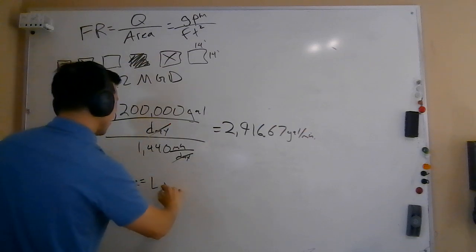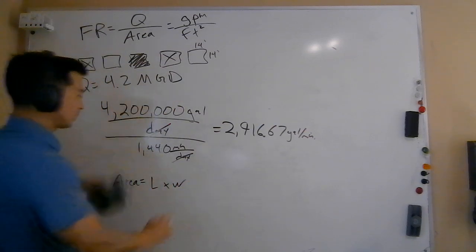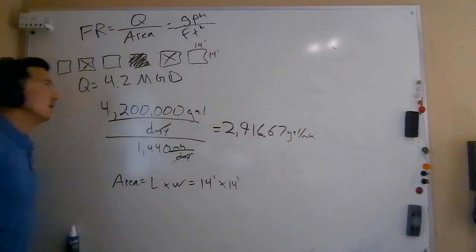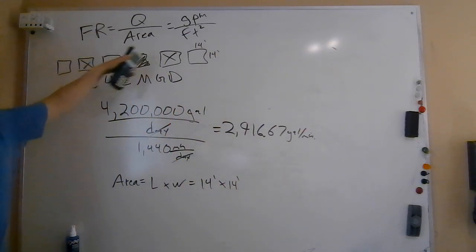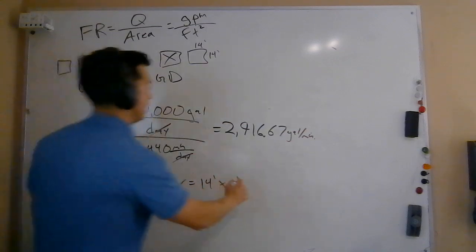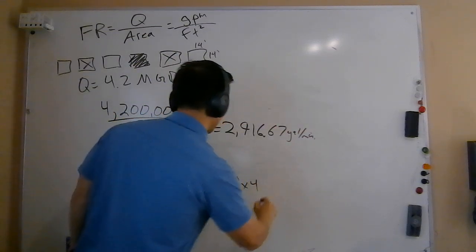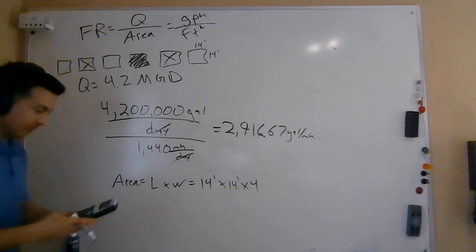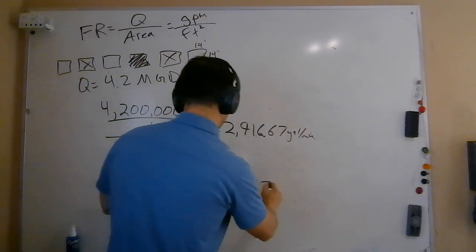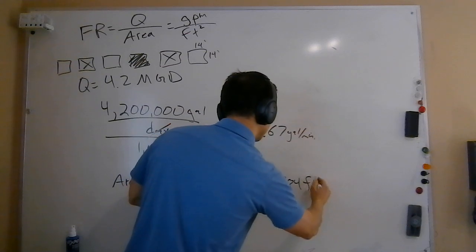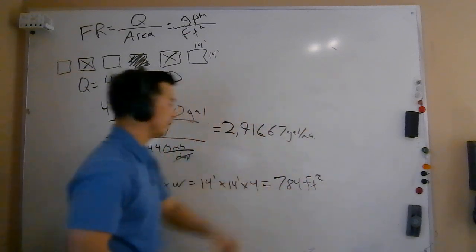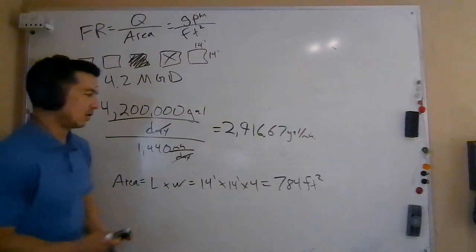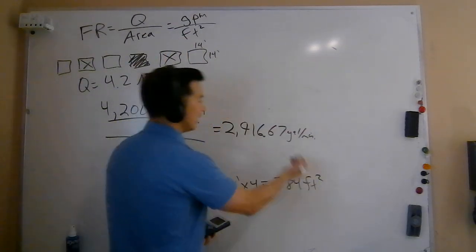So how do we calculate that? Well, it's just length times width. So in this problem here, it's going to be 14 feet times 14 feet. We also want to make sure we account for the fact that there are four filters treating this flow rate. So we're also going to multiply that by four. So what do I get? 14 times 14 times four filters. I get an area of 784 square feet. Remember square feet, feet times feet. Square feet makes sense because we're looking for an area.